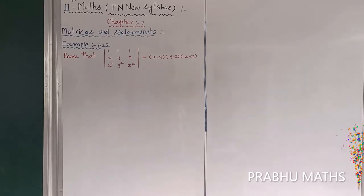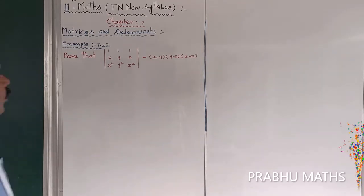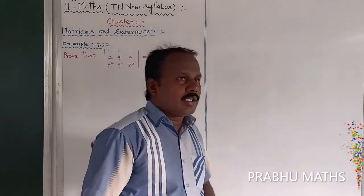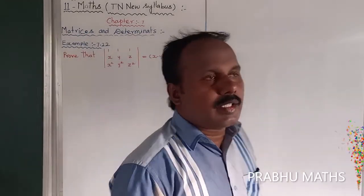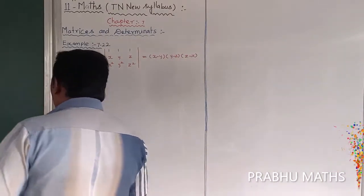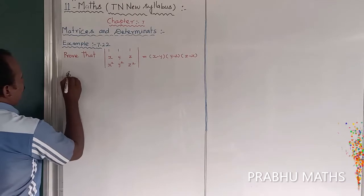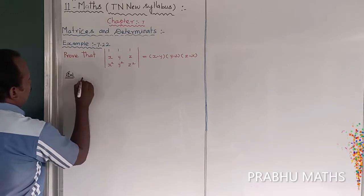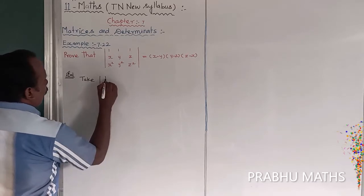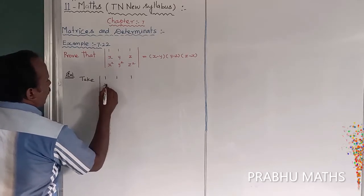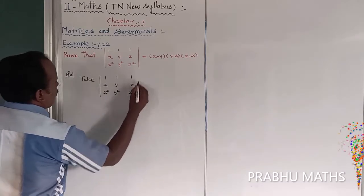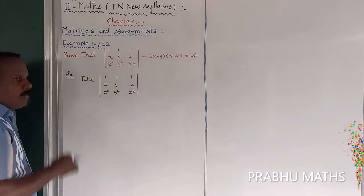Example 7.22: prove that the determinant of the matrix [1, 1, 1; x, y, z; x², y², z²] is equal to (x−y)(y−z)(z−x). First, let us take the left hand side — the determinant of [1, 1, 1; x, y, z; x², y², z²].